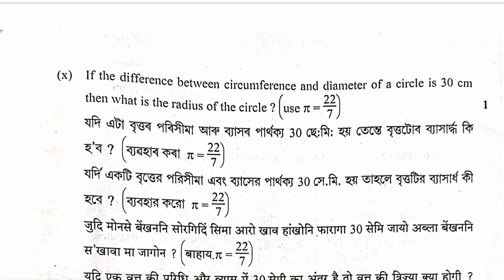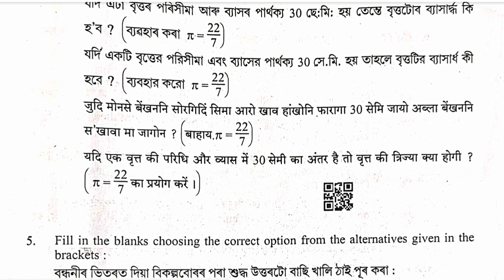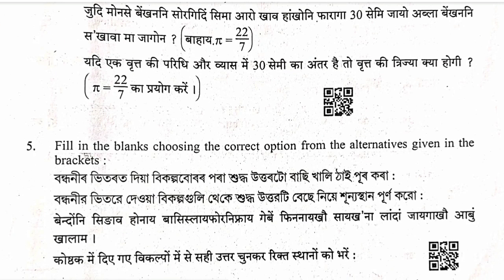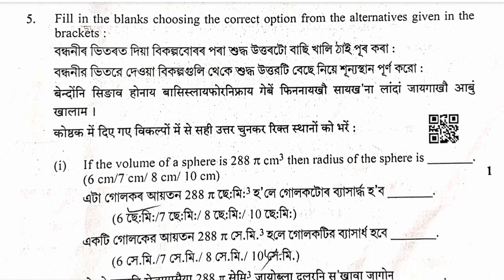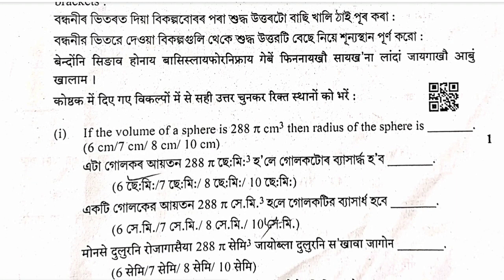Fill in the blanks section: choosing the correct option from alternatives given in brackets. Question 1: If the volume of a sphere is 288 pi centimeter cube, then find the radius of the sphere.